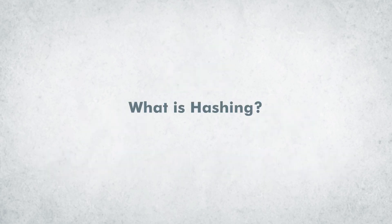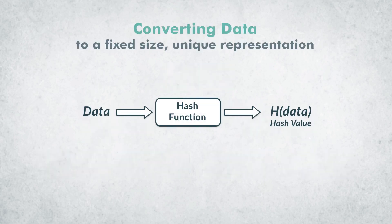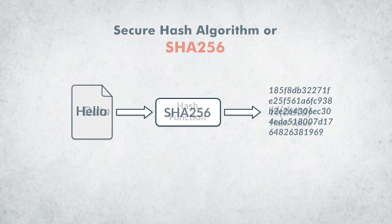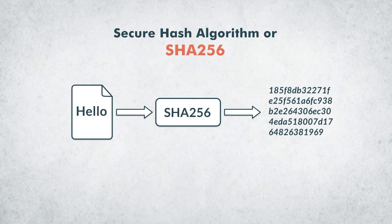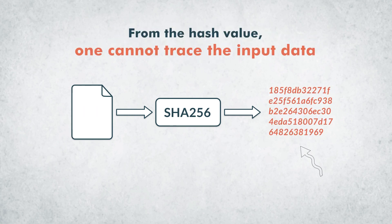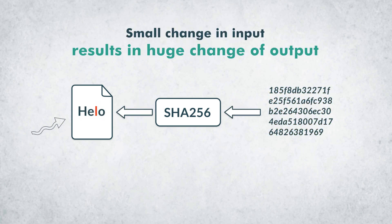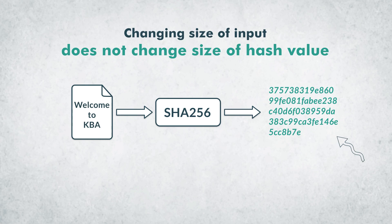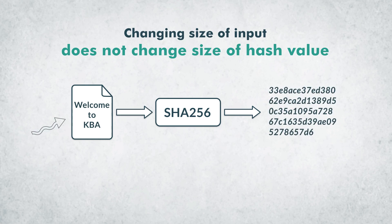You might now think, what is hashing? Hashing is the process of converting data to a fixed size, unique representation called hash value. Secure hash algorithm, or SHA-256, is the commonly used hash function. The hash functions have certain important properties: from the hash value, one cannot trace the input data. Even a small change made in the input can result in a totally different hash value. The size of the hash value remains constant, even if the size of the input is different.